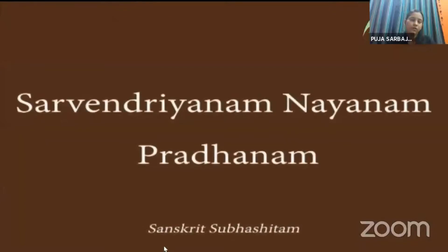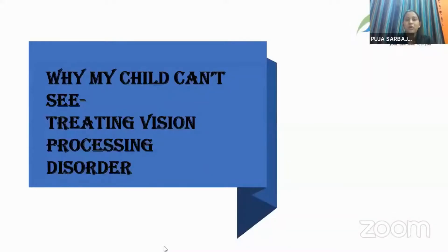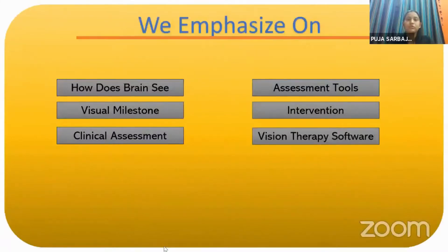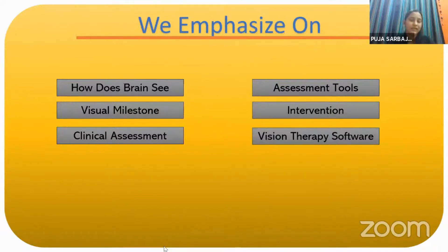Vision is the most precious of all our senses. Today my topic is 'Why My Child Can't See: Treating Visual Processing Disorder.' I'm going to emphasize how the brain sees, visual milestones, clinical assessment of a child with cortical visual impairment, assessment tools I use regularly in my clinic, basic intervention, and a vision therapy software we developed for children with cortical visual impairment.